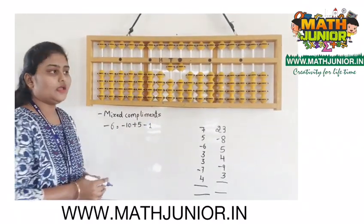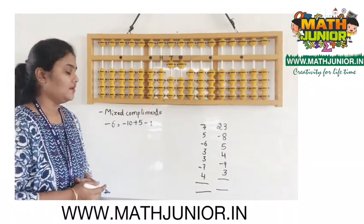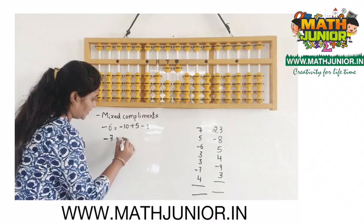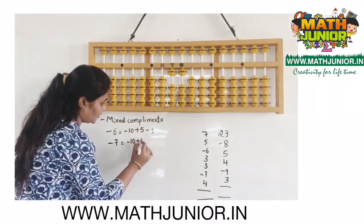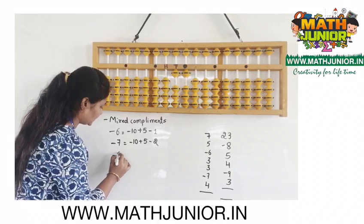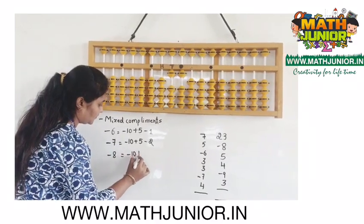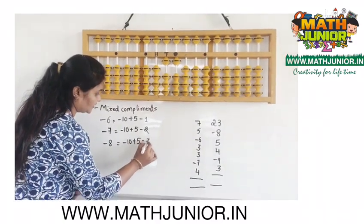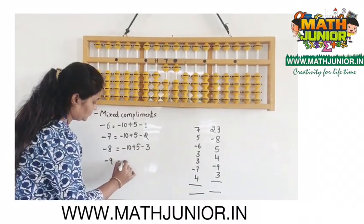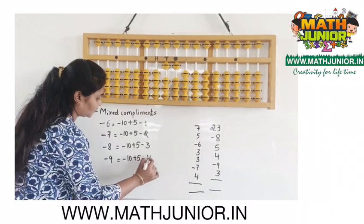In a similar way, the formulas for minus 7, minus 8, and minus 9 are: minus 7 equals minus 10 plus 5 and minus 2; minus 8 equals minus 10 plus 5 and minus 3; minus 9 equals minus 10 plus 5 and minus 4.